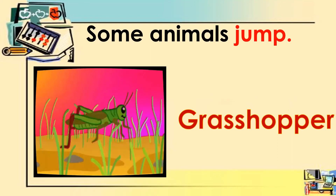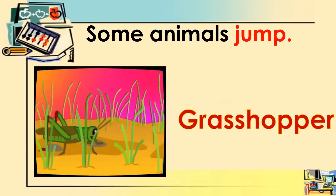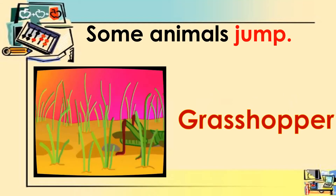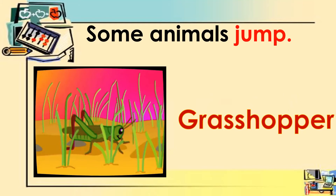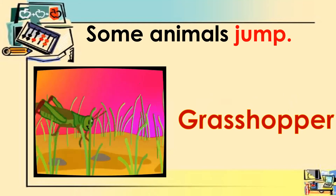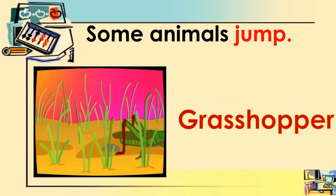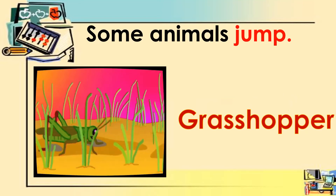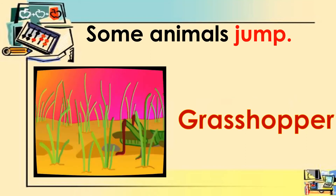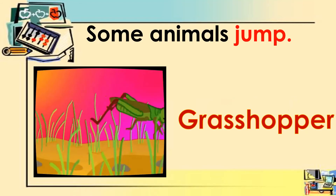The next animal that jumps is grasshopper. Grasshoppers jump. Let's spell the word grasshopper: G-R-A-S-S-H-O-P-P-E-R, grasshopper.